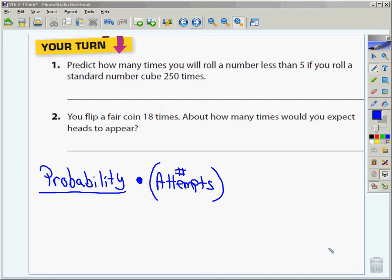So if we look at the year term number one, predict how many times you will roll a number less than five. So the first thing I've got to do is write down the probability of less than five. Now, rolling a regular number cube, what's the total number of faces on a standard die? Six.